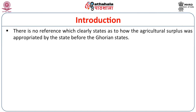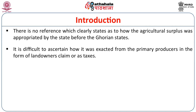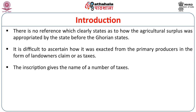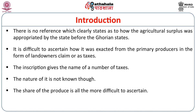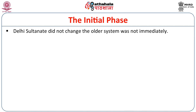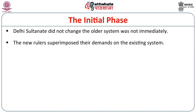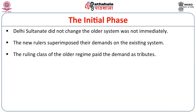There is no reference which clearly states how the agricultural surplus was appropriated by the state before the Ghorians came. It is difficult to ascertain how it was exacted from the primary producer — whether as the landowner's claim or as taxes. Inscriptions give the names of a number of taxes, but whether they were claimed as taxes or as the landowner's claim for the land is not known. In the initial phase of the Delhi Sultanate, there was not much change in the older system, on which the new rulers superimposed their demands.